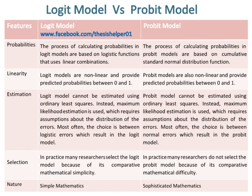Logit Models and Probit Models are non-linear and provide predicted probabilities between 0 and 1. Logit Models and Probit Models cannot be estimated using ordinary least squares. Instead, maximum likelihood estimation is used, which requires assumptions about the distribution of the errors.